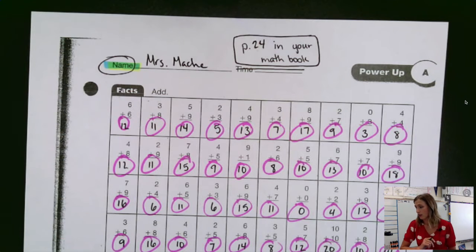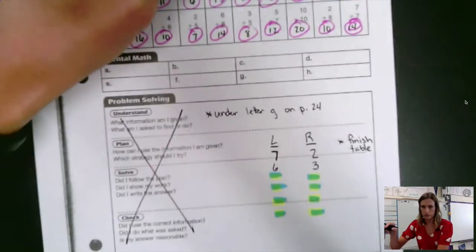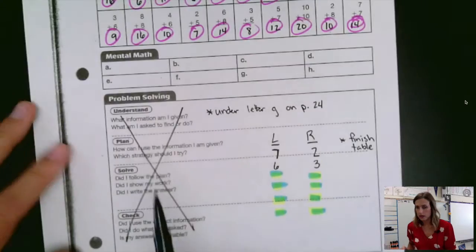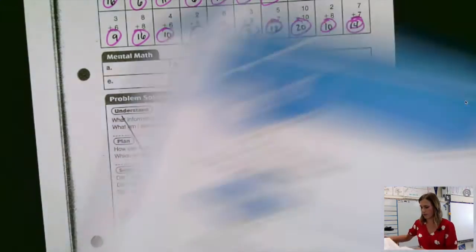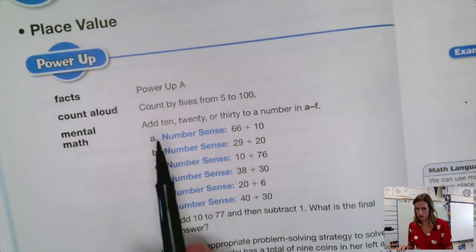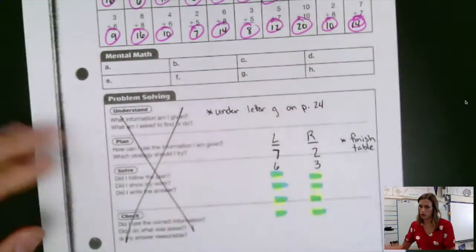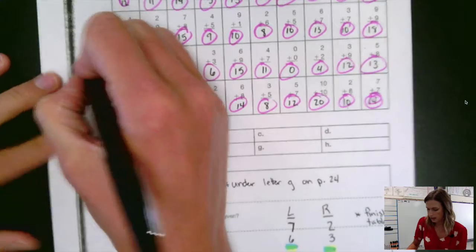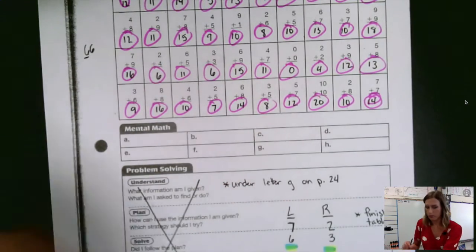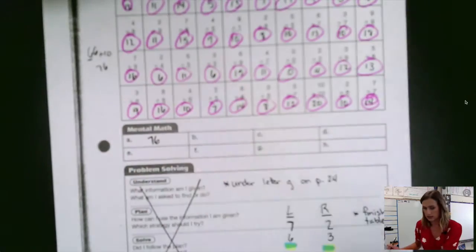We're going to work on adding ten, twenty, and thirty to a number once again. On our mental math, letter A says sixty-six plus ten. Remember, that's letter A in our book. If we're going to do sixty-six plus ten, we can just take sixty-six, take our tens column, six, and just bump it up once. We get plus ten is seventy-six. So A is seventy-six.